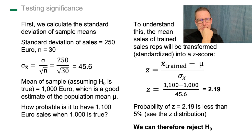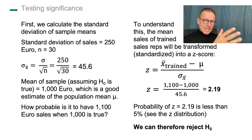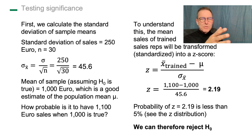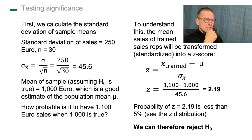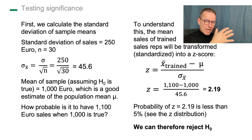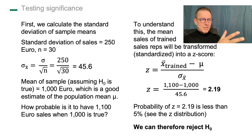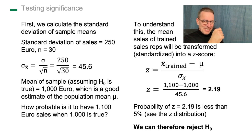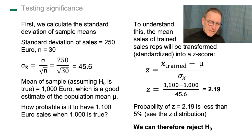Of course we can go much deeper and look at different sorts of testing — that's a big chapter. But what I want you to understand is this fundamental idea of assuming the null hypothesis is true, then looking at whether the difference we find could have occurred by chance. In the next episode we're going to talk about variance analysis, which is probably the best way to test hypotheses in an experimental setting. Thank you, and see you then.